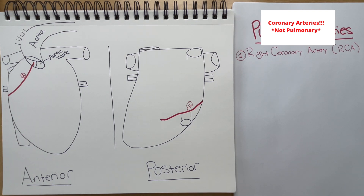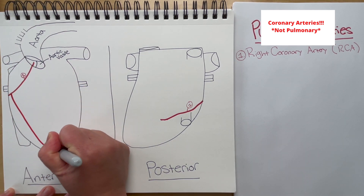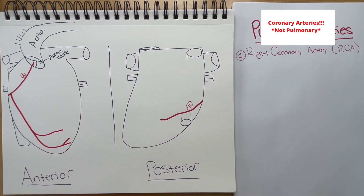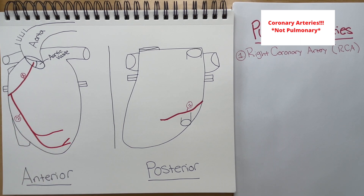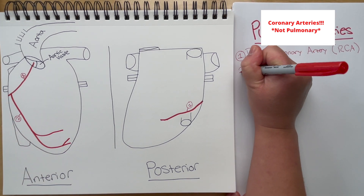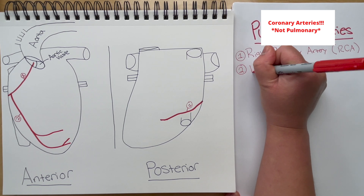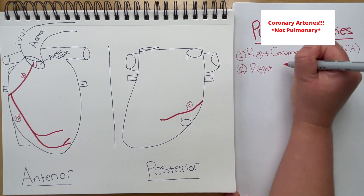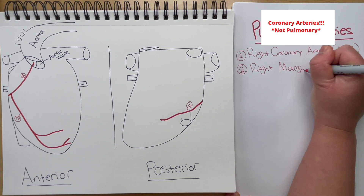Next we have the right marginal artery. This branches right off of the right coronary artery and it descends downwards towards the apex of the heart. This also supplies blood to the right portion of the heart as well as the apex of the heart and the right and left ventricles. We'll label this number two — the right marginal artery.